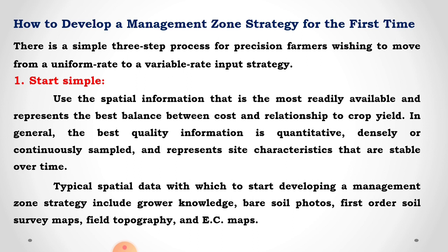Management zones are developed using a simple three-step process for precision farmers wishing to move from a uniform rate to variable rate input strategies. The first step is to start simple. Typical spatial data for starting a management zone strategy includes grower knowledge, bare soil photos, first-order soil survey maps, fertility maps, topographical maps, and EC maps. Use information that represents the best balance between cost and crop yield. The best quality information is quantitative, densely sampled, and represents site characteristics that are stable over time.